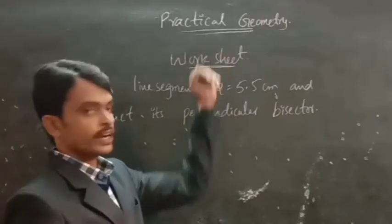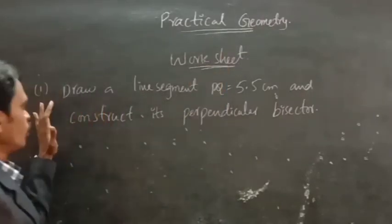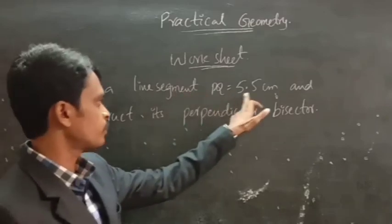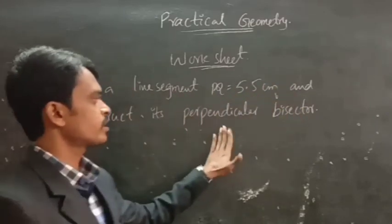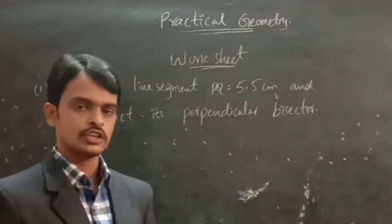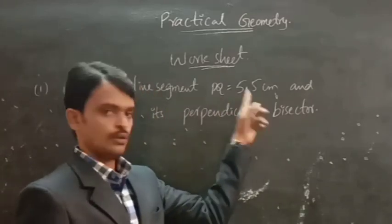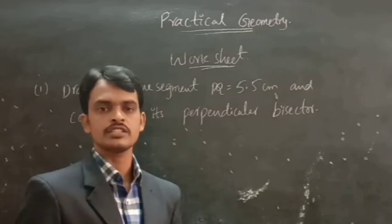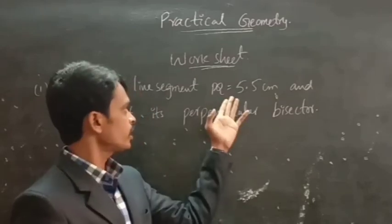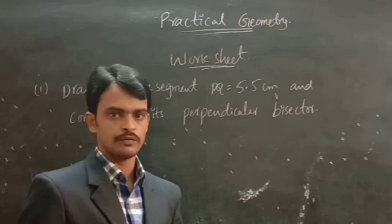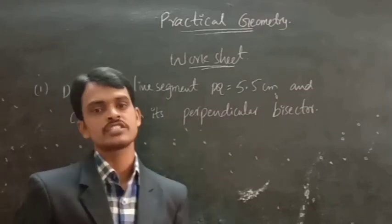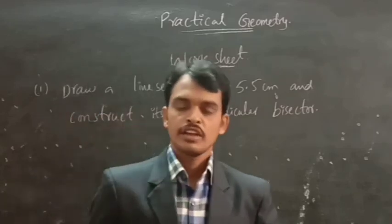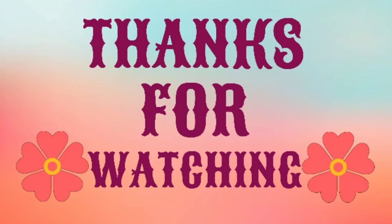Worksheet on practical geometry: Draw a line segment PQ of 5.5 cm and construct its perpendicular bisector. First, draw a line segment PQ of 5.5 cm, then construct its perpendicular bisector. Keep watching. Thank you. I'll see you afterwards. Bye bye.